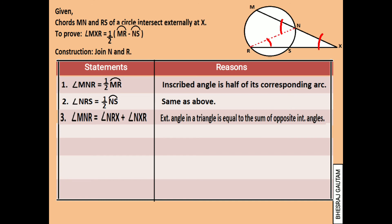Simplifying this step, we can also write that angle NXR is equal to angle MNR minus angle NRX.